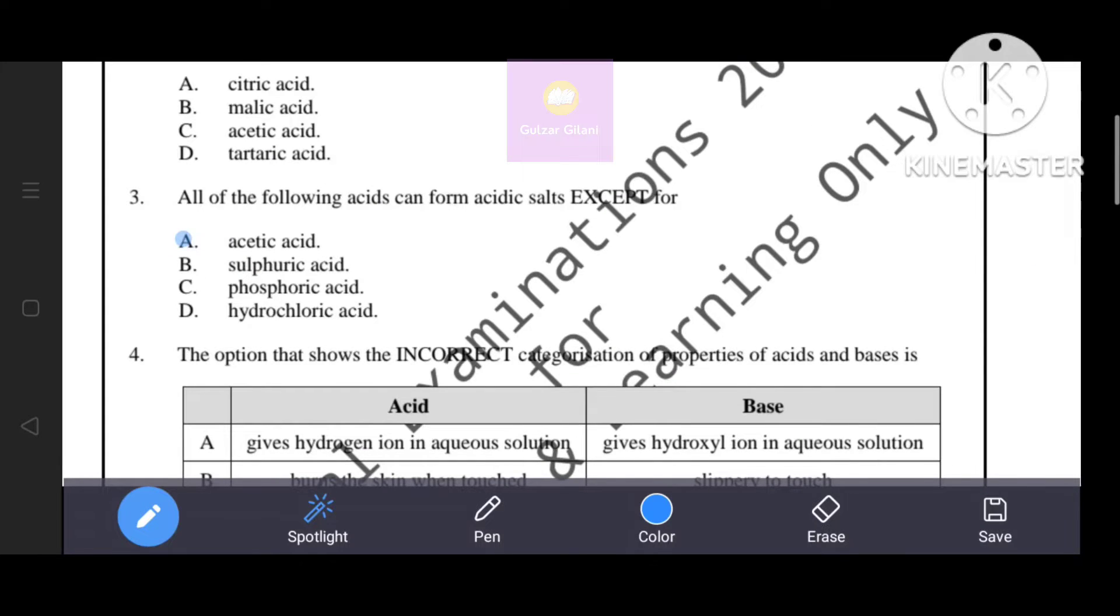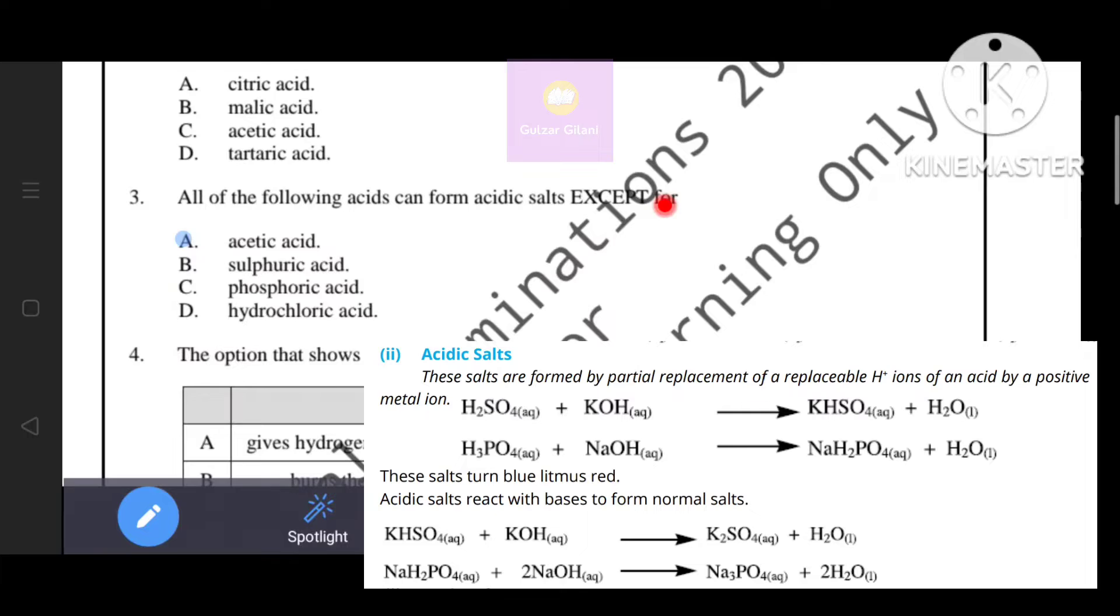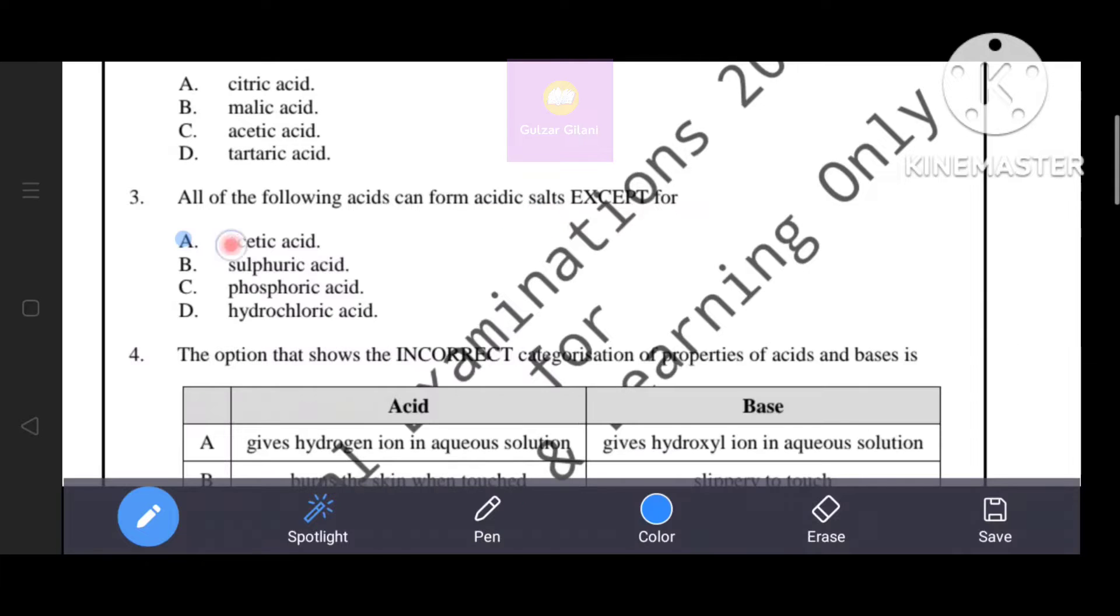Next question. All of the following acids can form acidic salts except... As you know, acidic salts are formed by partial replacement of a replaceable hydrogen ions of an acid by a positive metal ion. Sulfuric acid, phosphoric acid, hydrochloric acid can form acidic salts, except option A, acetic acid. That's why option A is the correct answer.